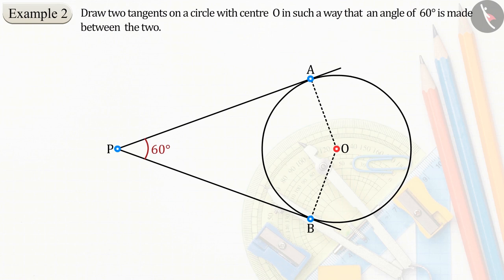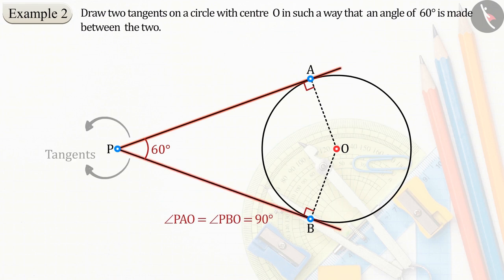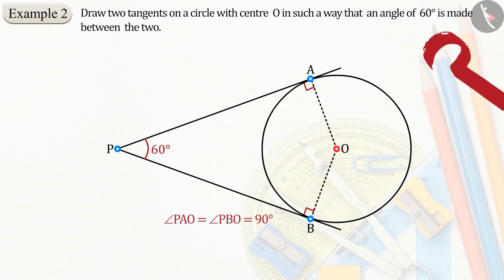In which the angle APB is 60 degrees and angles PAO and PBO are right angles. Because PA and PB are tangent lines and OA and OB are the radii of the circle. Can you tell the value of angle AOB?